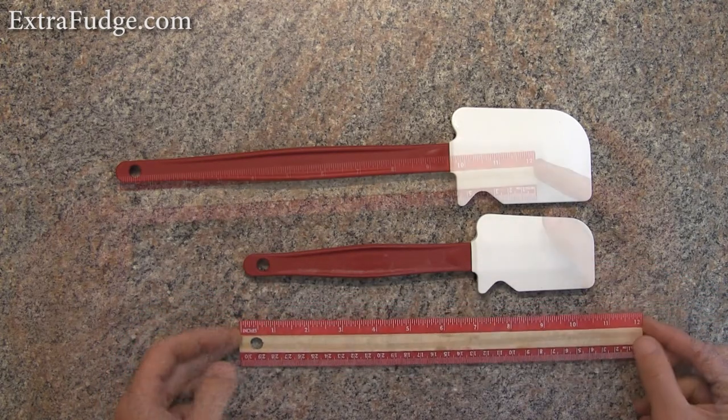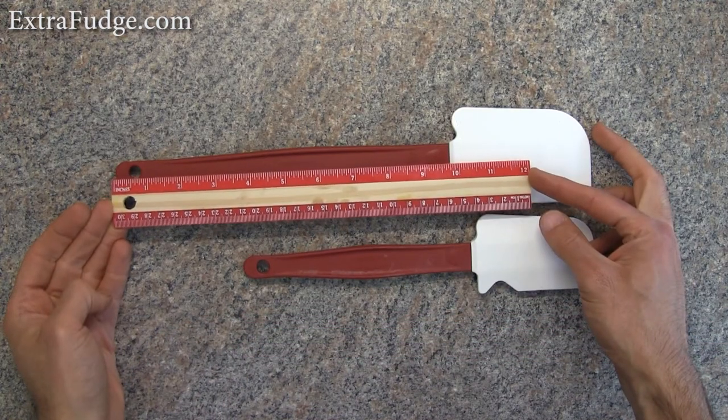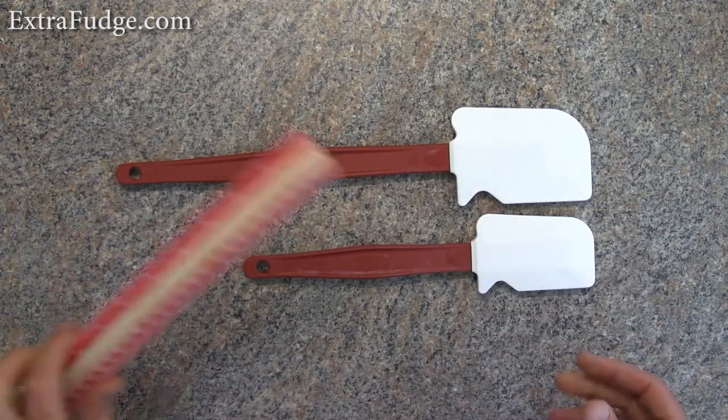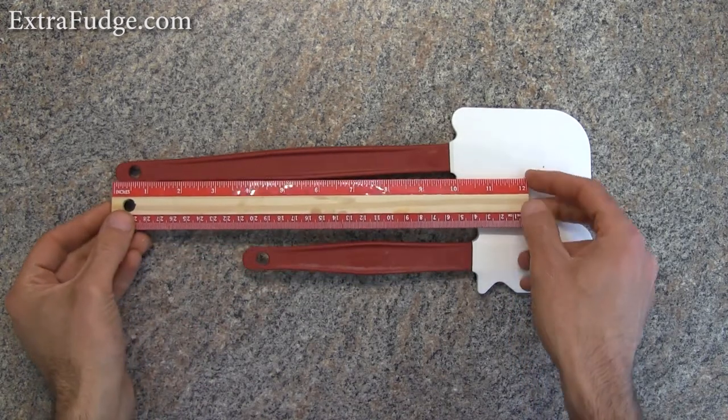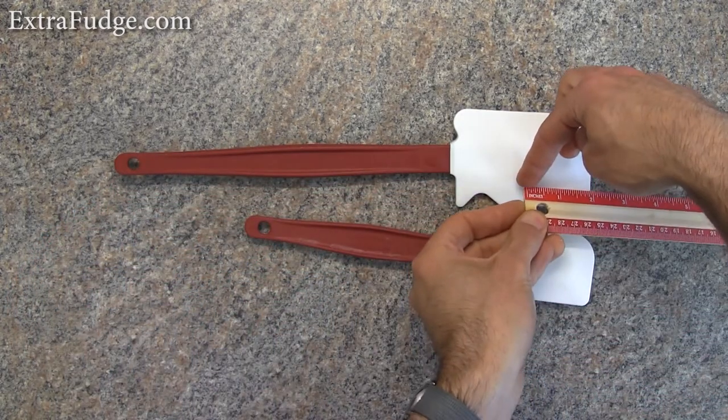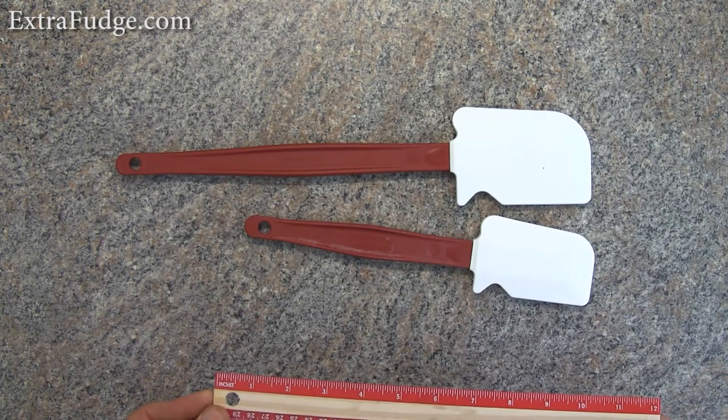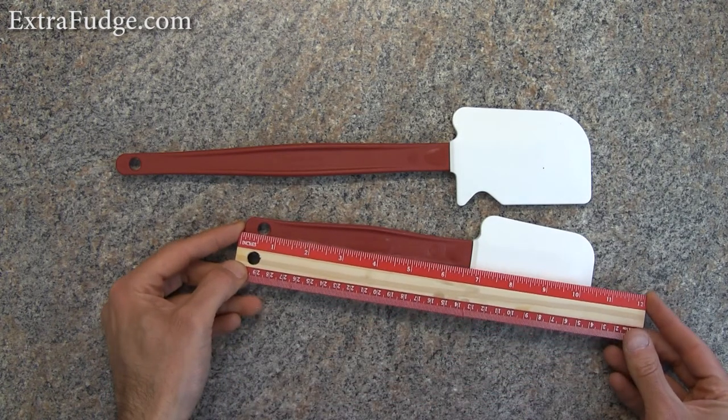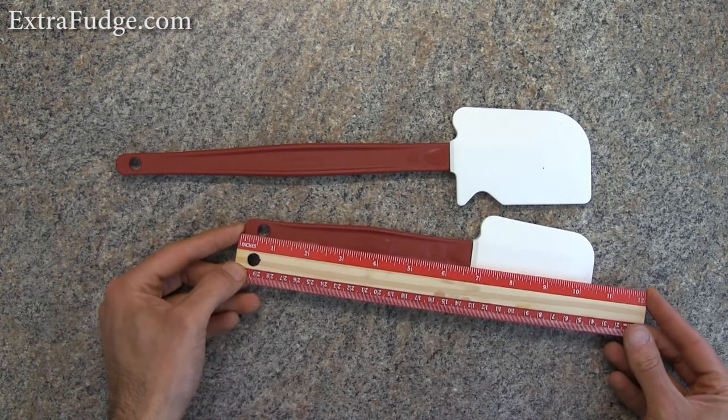So as you can see, the thirteen and a half inch is really fifteen inches in length, and the nine and a half inch is about ten and a half inches in length. I have no idea how they calculate the length—it's weird.